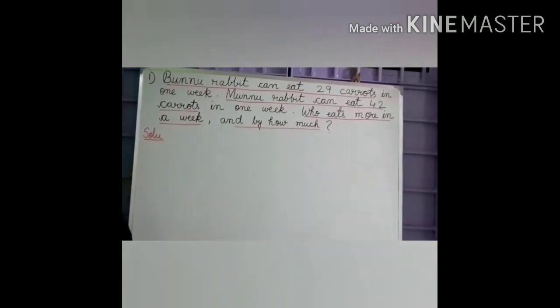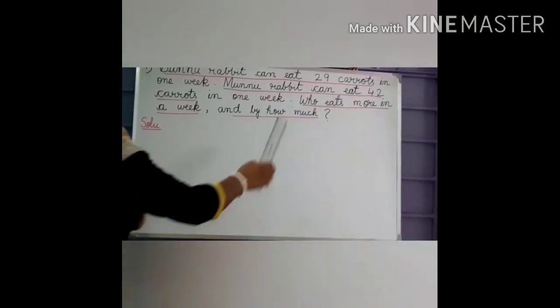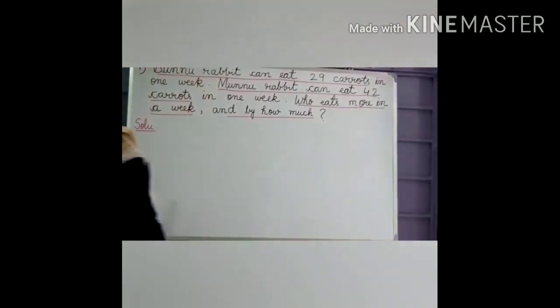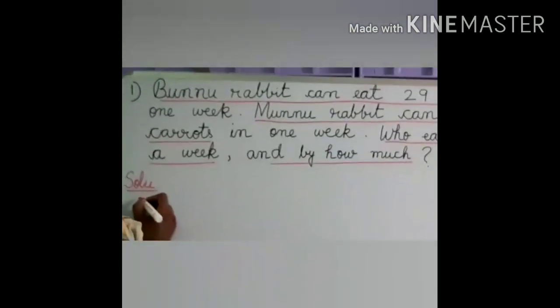In the word problem the first number is 29 and the second number is 42. But you know that in subtraction we always write the bigger number first. So we have to see the bigger number, which is 42. Who is eating 42 carrots? Muru Rabbit.